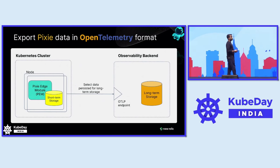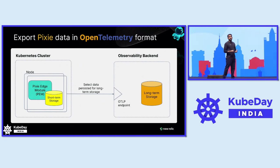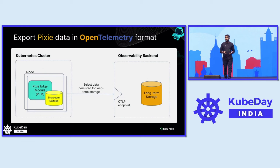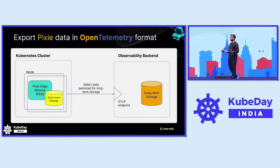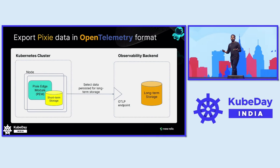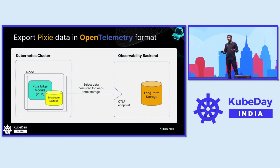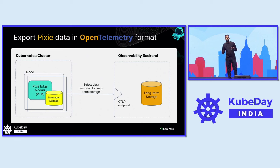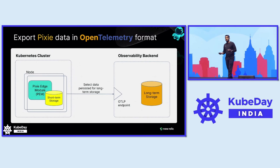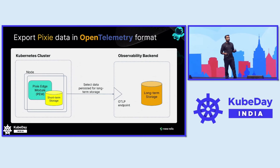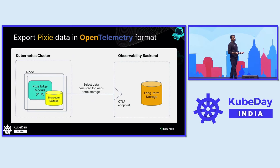Pixie already supports the latest open standards for data with OpenTelemetry. The telemetry data with Pixie is stored in two different locations: one is in your cluster's memory, which lives for up to 24 hours, and you can choose to export it to a long-term external storage to a fully supported OpenTelemetry platform with Pixie's plug-in system. All you need is an OTLP endpoint, and you are set.